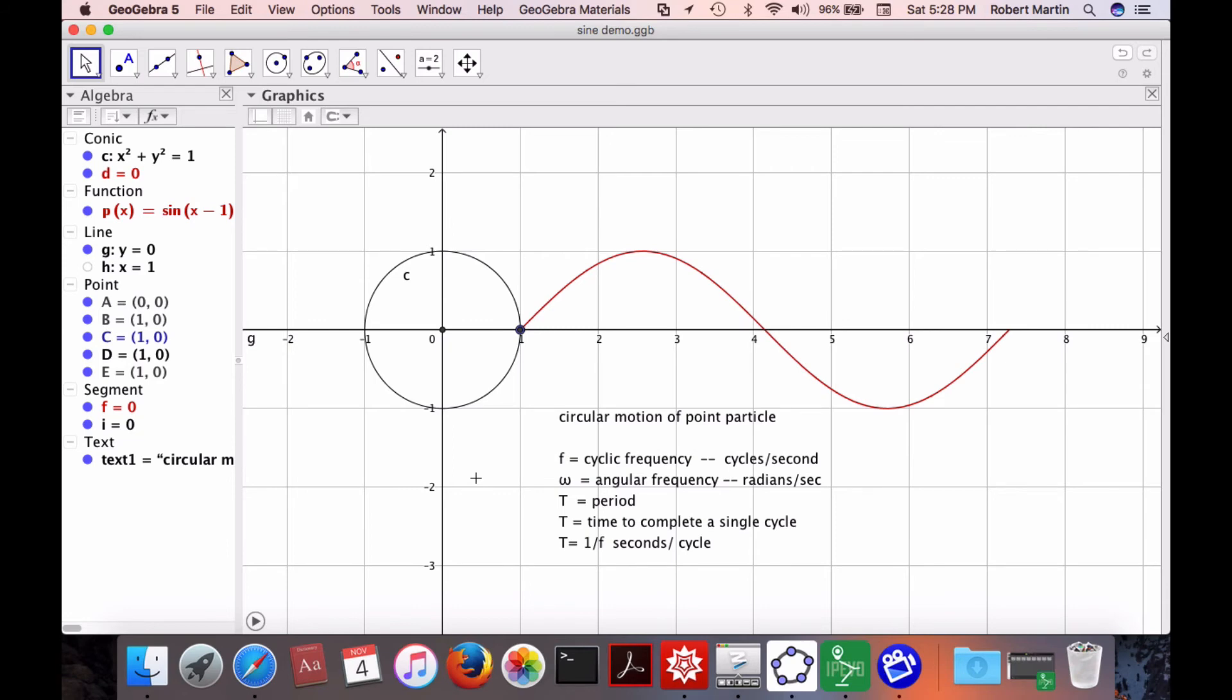In this next animation, we demonstrate how the motion of a point, circular motion of a point, that is, will sweep out the familiar sine wave. As t varies from 0 to 2π, we see that a complete cycle of the sine wave is produced. Now, the frequency of this waveform is represented by the letter F and is given in cycles per second. The angular frequency is represented by the Greek letter omega, and that's in units of radians per second. So, indeed, as the point sweeps through an arc length, an angle is swept out. The period of the oscillation is the time to complete a single cycle. So the period is in units of seconds per cycle, meaning it would be the reciprocal of the frequency.